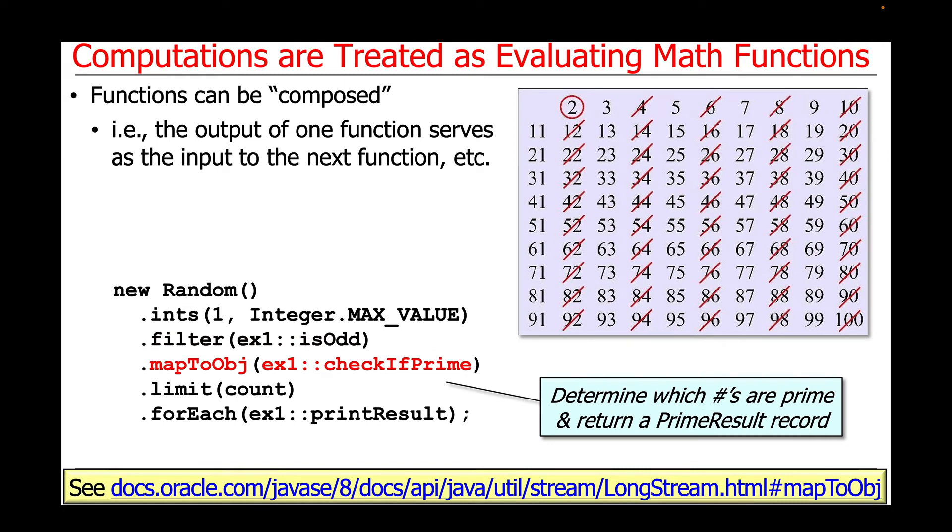The next stage in the stream is the map to object intermediate operation. This is used to perform some function to make some check or some change to the value that's flowing through the stream. In this case, we're going to call the check if prime method reference, which is used to determine which numbers are prime,